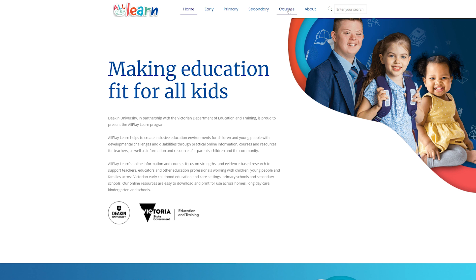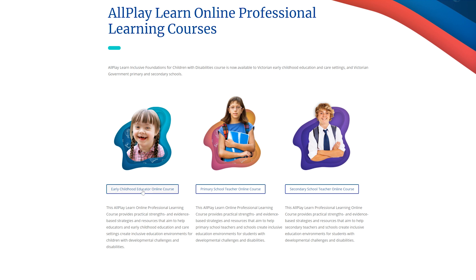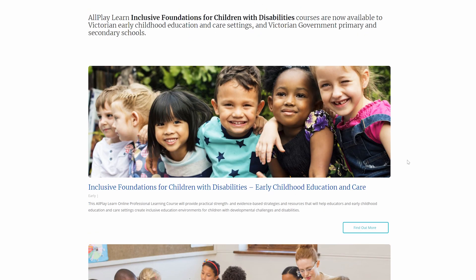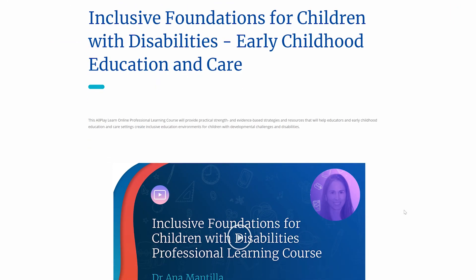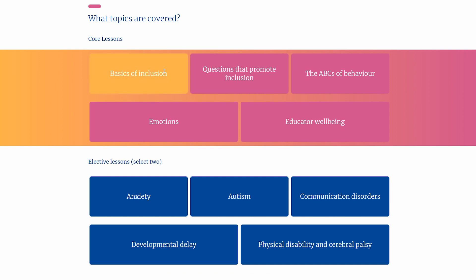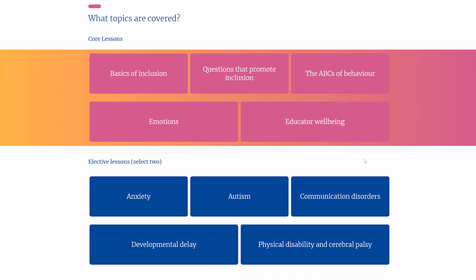All Play Learn Inclusive Foundations for Children with Disabilities courses were developed for Victorian long day care centres, kindergartens and government primary and secondary schools. The courses focus on content knowledge about disabilities and provide strengths and evidence-based strategies that are practical and simple for educators and teachers to implement. Educators will be able to choose from different lessons within the early childhood course to suit their learning and teaching needs and interests. Completing the course takes approximately four to six hours and includes master classes, content videos, case studies, evaluation and reflection questions, and opportunities for collaborative learning amongst peers.